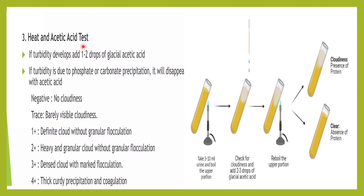Next is the heat and acetic acid test. About 5–10 mL of urine is taken and the upper portion is boiled. We observe for turbidity, then add 2–3 drops of glacial acetic acid. If the turbidity disappears on adding glacial acetic acid, it is due to phosphates or carbonates. If the cloudiness persists, it indicates the presence of proteins.